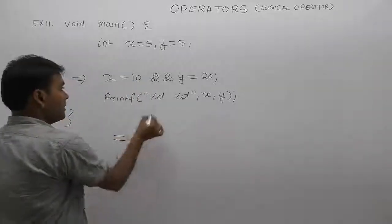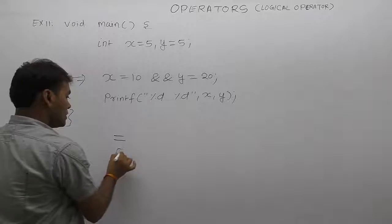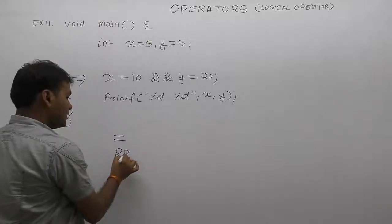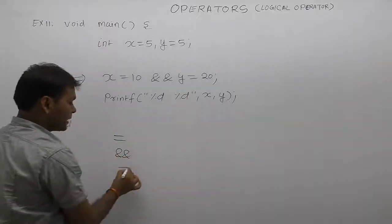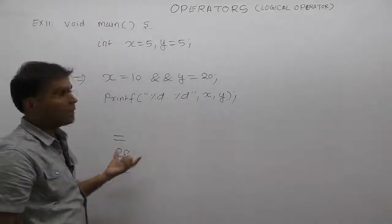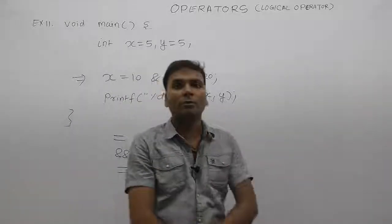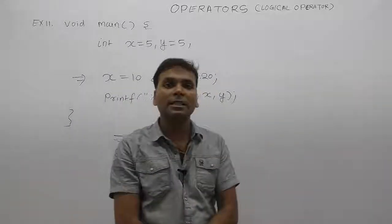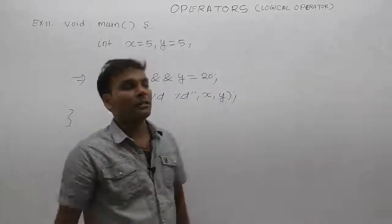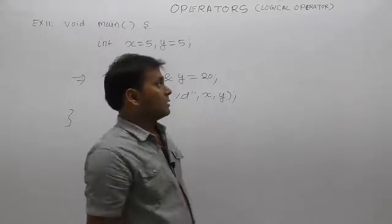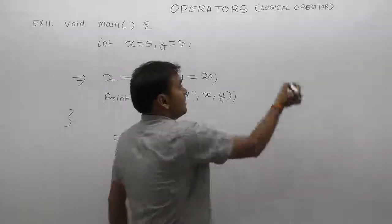First of all, assignment. Second one, logical AND. And third one, again assignment. Total three operators in the overall expression. There are three operators — some basic property about assignment.